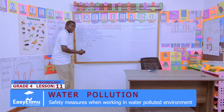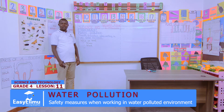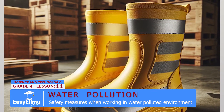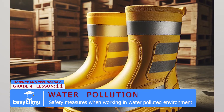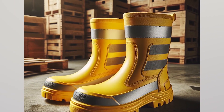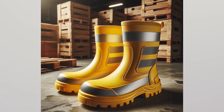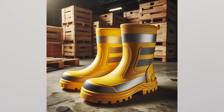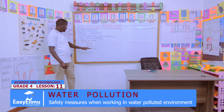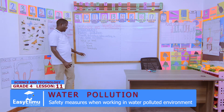Who else can tell us? Victoria, what do we require when working in a water-polluted environment? Gumboots — that is very correct. Why do we require gumboots? So that dirty water may not come into contact with our feet. Remember, dirty water is prone to waterborne diseases, like bilharzia and dysentery. To protect ourselves, we should always endeavor to wear gumboots.